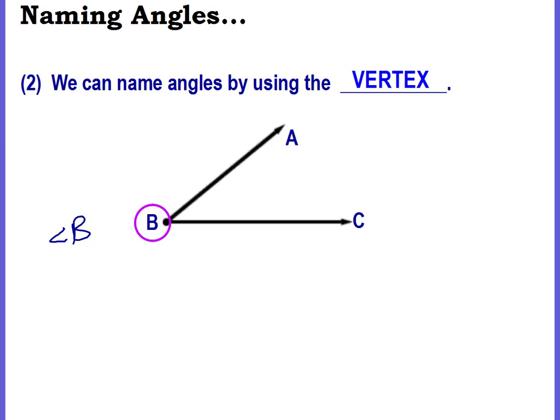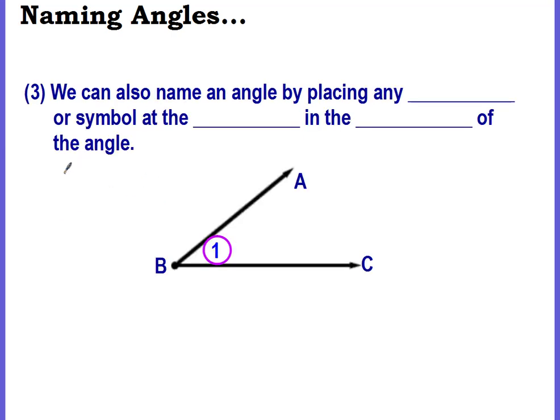This one is probably what you're used to. A third way is we can also name an angle by placing any number or symbol at the vertex in the interior of the angle. We don't really use this in sixth grade, but there are times where you might see it, so I want you to be prepared. Sometimes they'll just put a 1 here, and that means this angle inside, angle 1. That's what they're talking about. And that's all there is to naming angles.